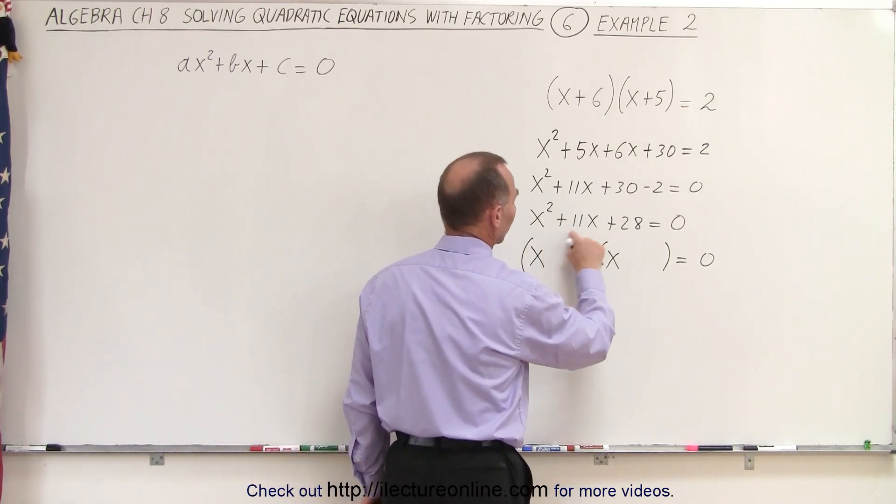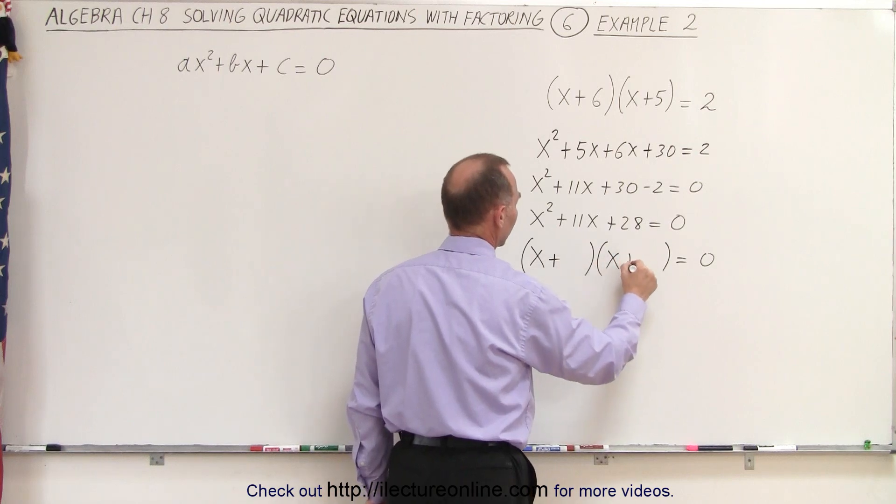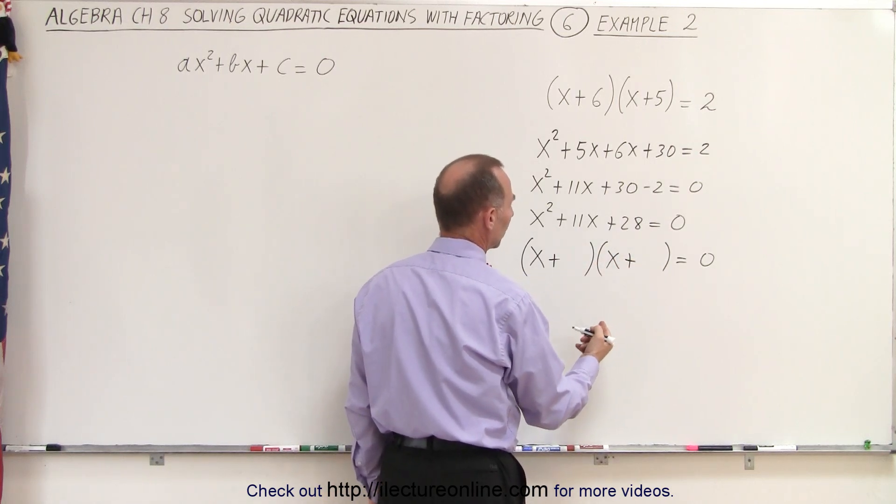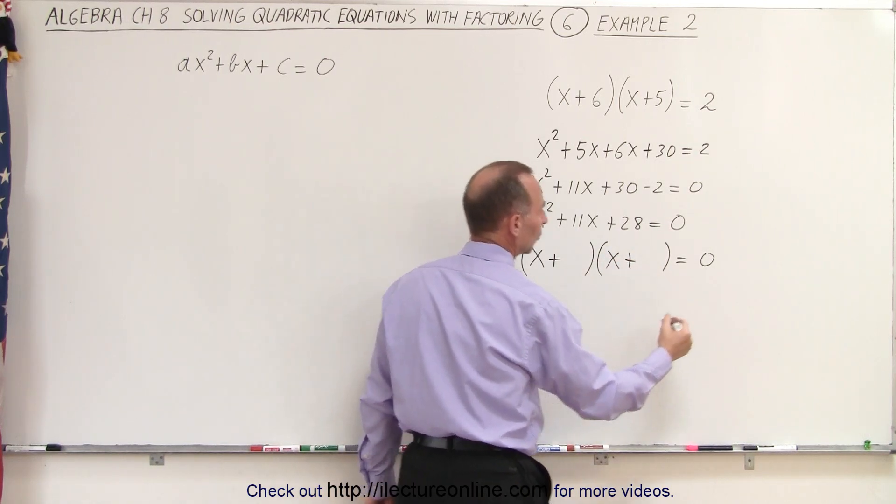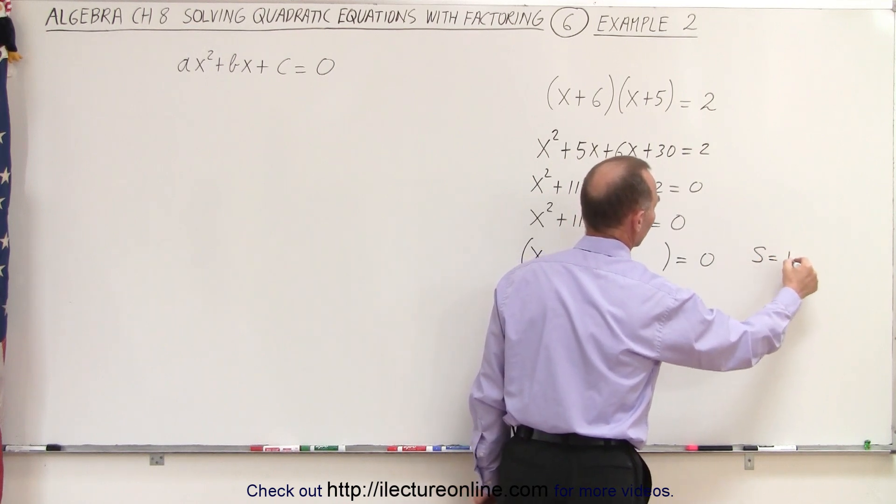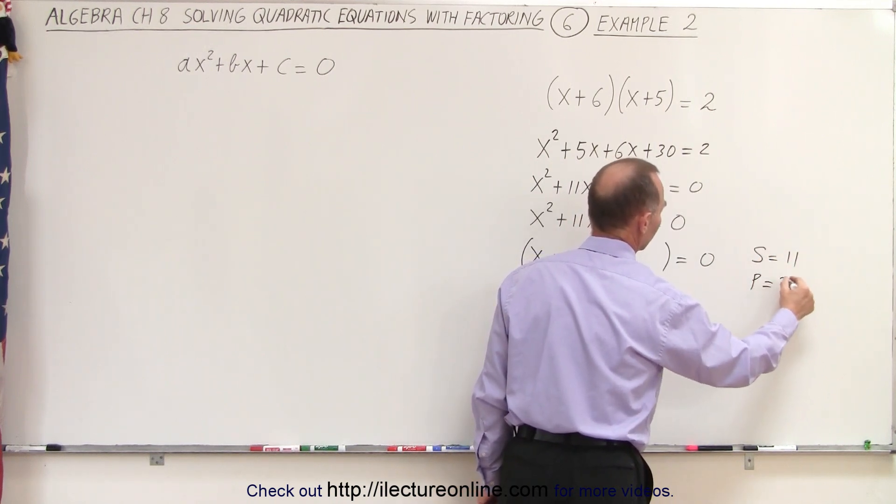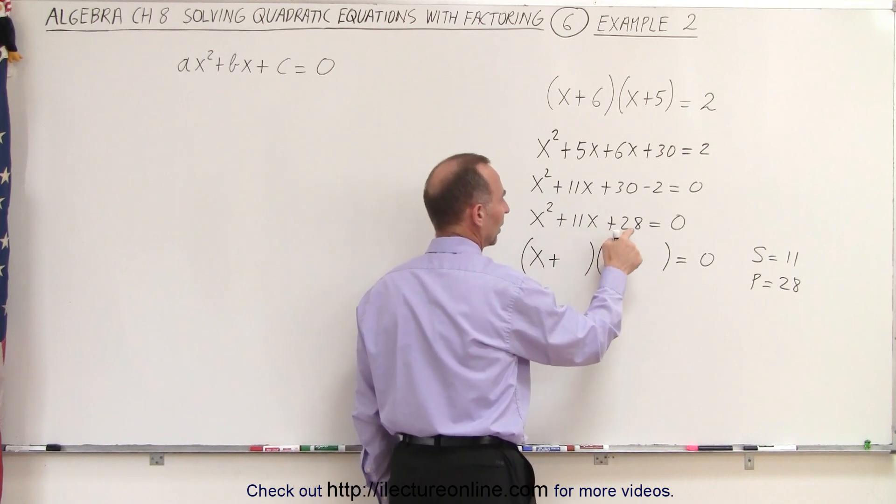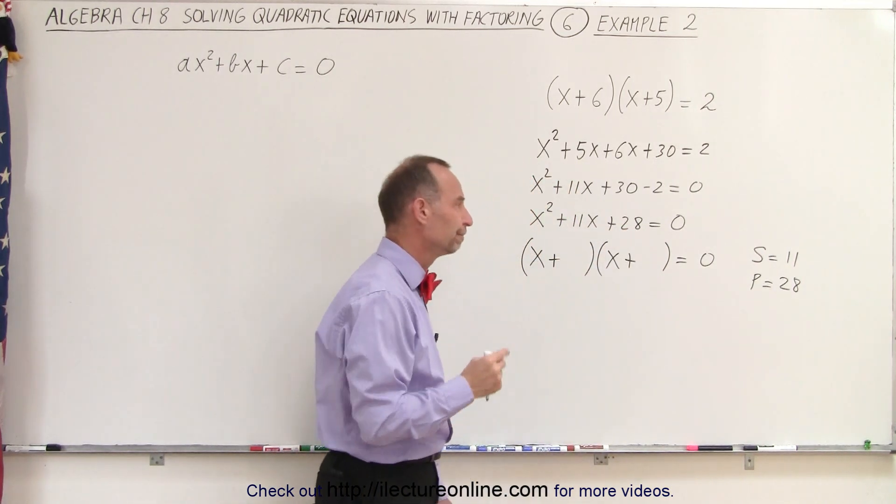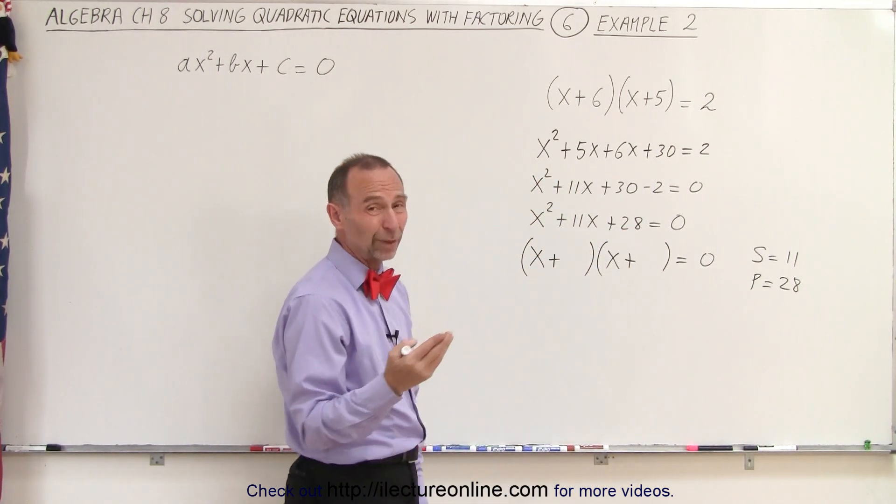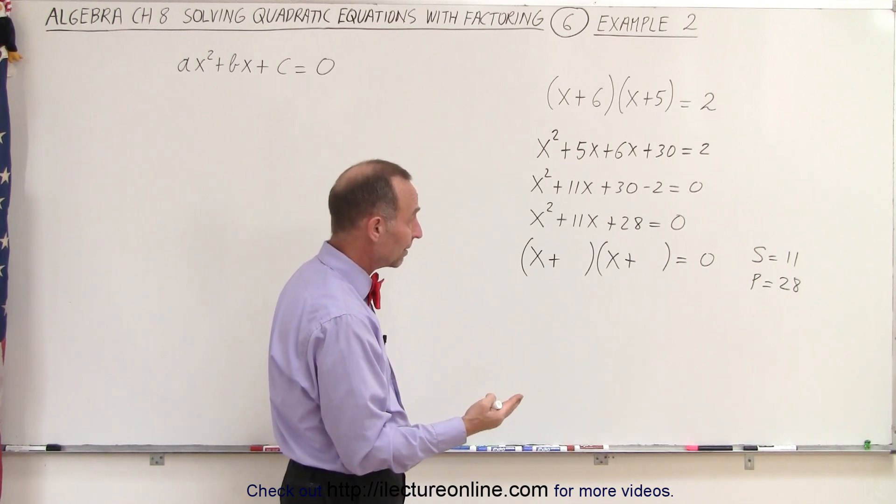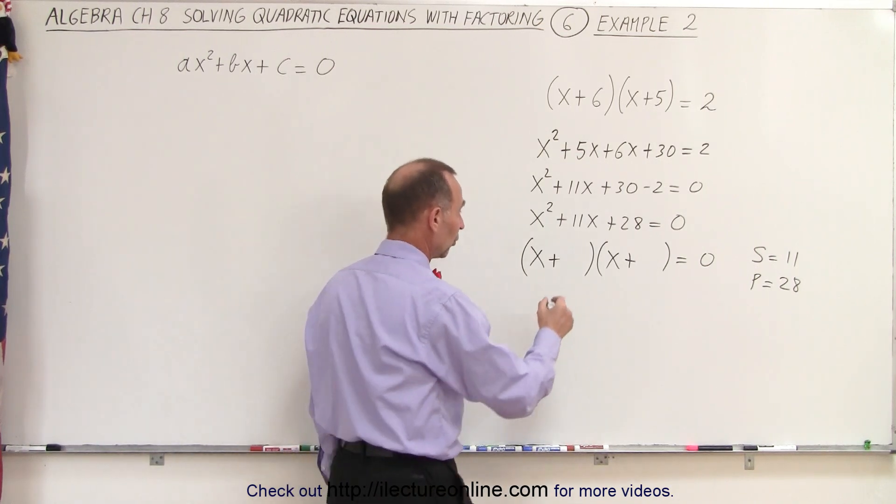Since all the signs are positive, we need two plus signs here. And now we're looking for two numbers here and here in such a way that the sum is equal to 11 and the product is equal to 28. The sum must equal this number and the product must equal that number. So let's see, to get 28, 4 times 7 is 28 and 4 plus 7 is 11. So those are the two numbers, 4 and 7.